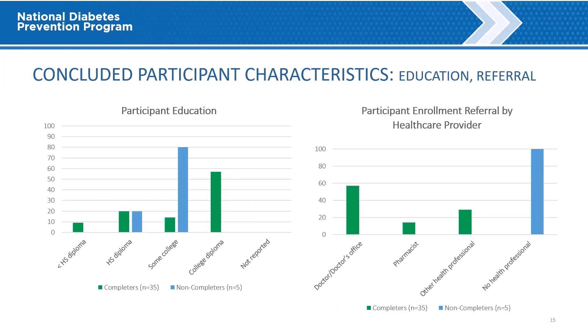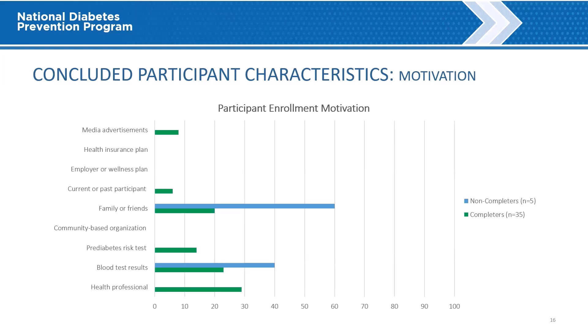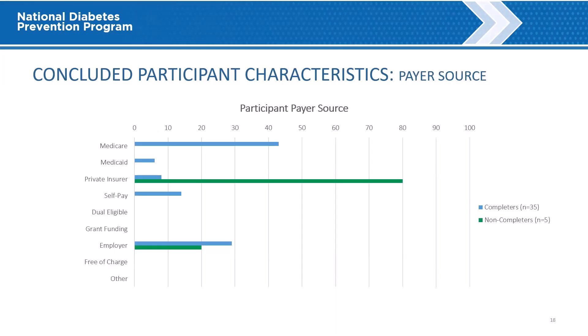Concluded Participant Characteristics: Education, Referral, Motivation, and Payor Source. Concluded participant numbers according to their self-reported education and whether they were referred by a healthcare provider are presented by completer status. Next, the number of concluded participants by completer status are shown according to their reported main motivation for entering the program. Finally, the last graph shows the number of concluded participants according to the payer source they reported as paying for their program enrollment, also shown by completer status.